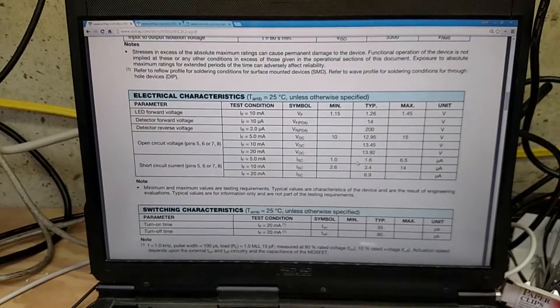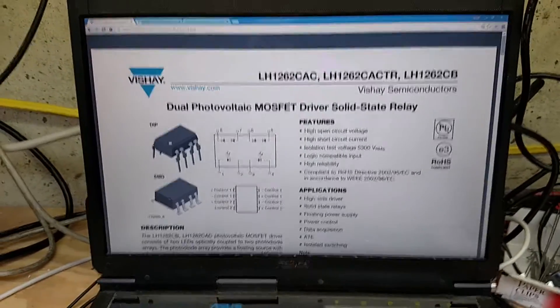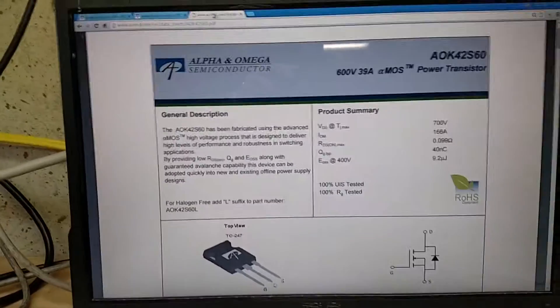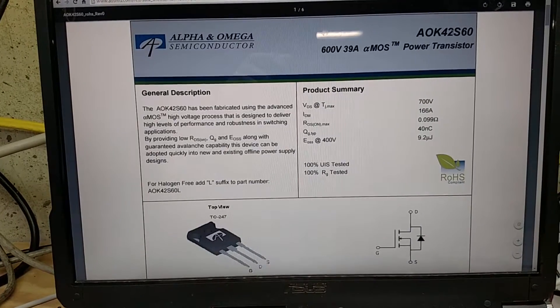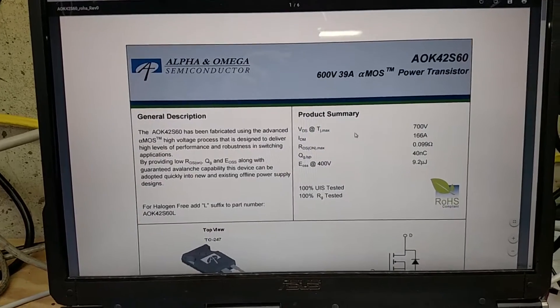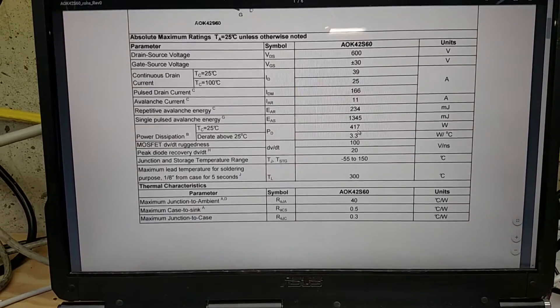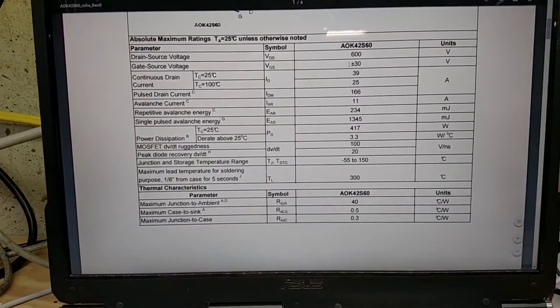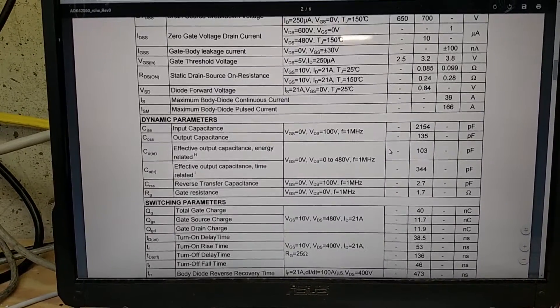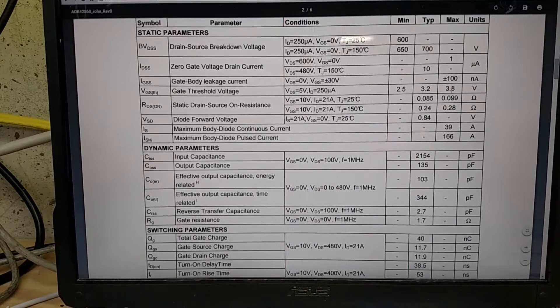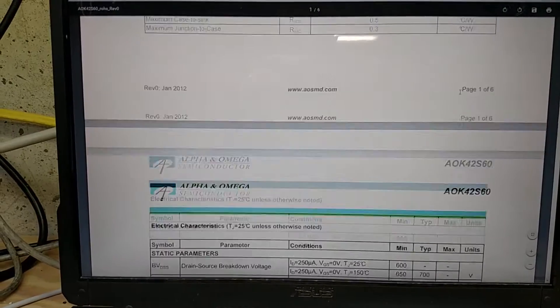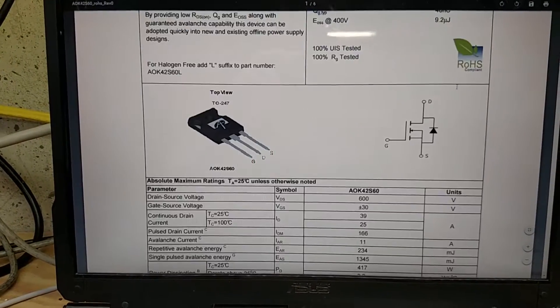So we've got that going on. The MOSFET that we're using is the AOK 42S60. It is a 600 volt 39 amp power MOSFET and you can see its VGS is good to plus or minus 30 volts which should be good there. And it only takes, once we get above 3.8 volts it's fully on so worst case we got 5 volts so we should be good with that guy.